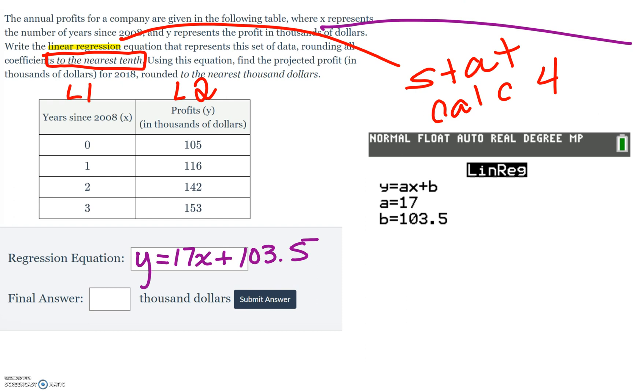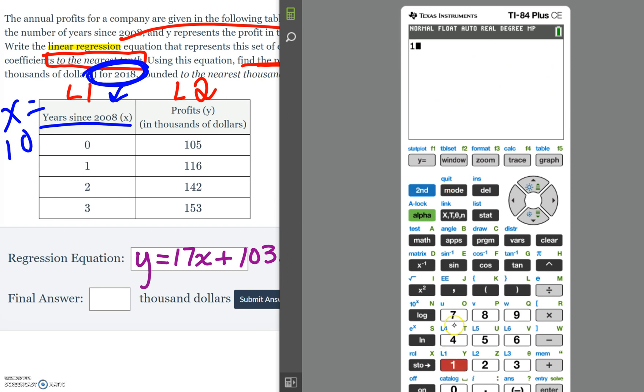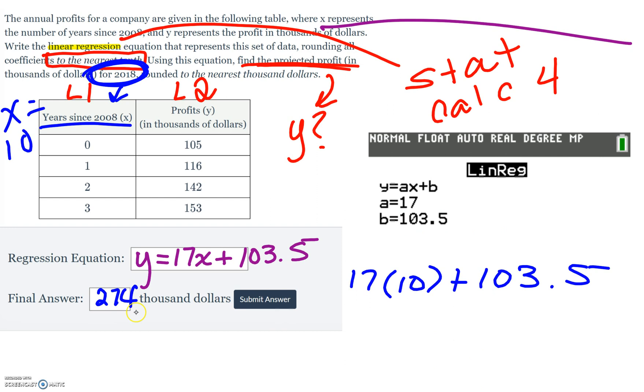Then it says, using your equation, find the projected profit. So we're looking for profit, which is y. We don't know what y is equal to, but we know that we want it for the year 2018. The year is related to our x values, but here it says year since 2008. So 2008 to 2018 is 10 years, so we're going to do x equals 10. So 17 times 10 plus 103.5. We would just go to our calculator's home screen and type that in. 17 times 10 plus 103.5. And we get 273.5, but it says to the nearest thousand of dollars. So we're just going to put 274. And then we would hit submit.